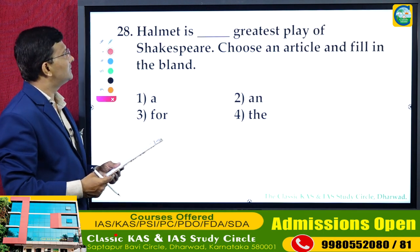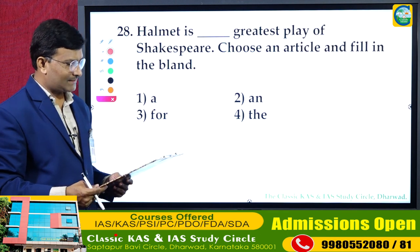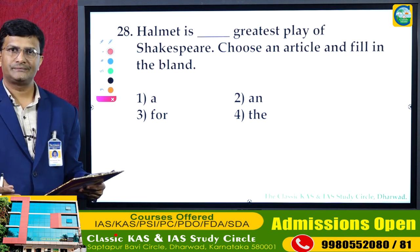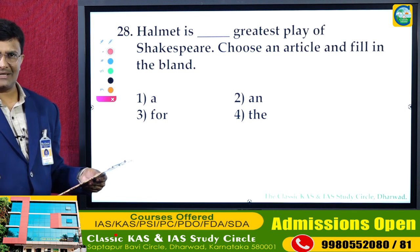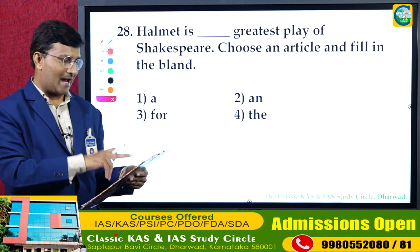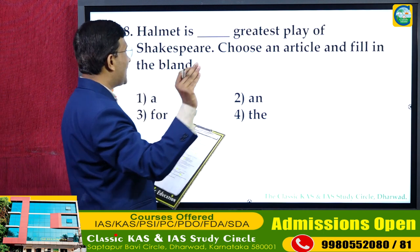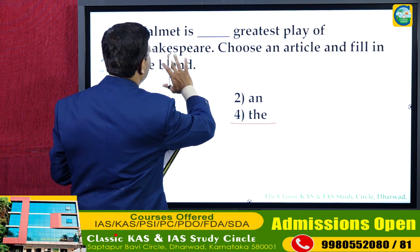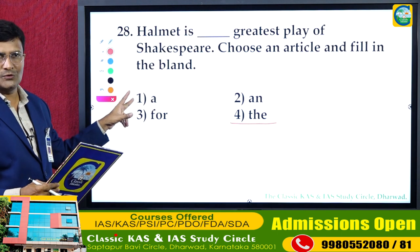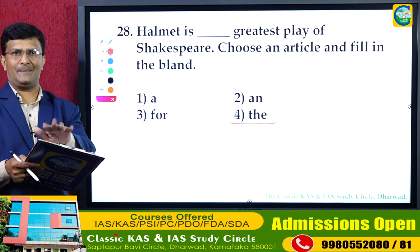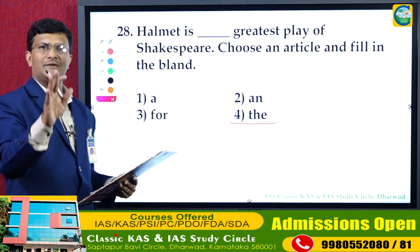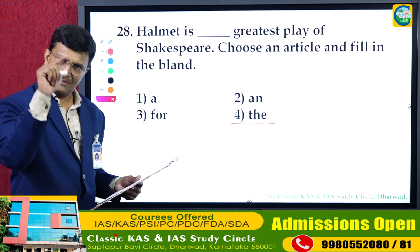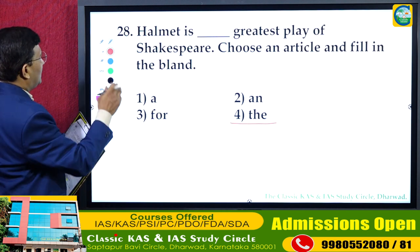Question 28: 'Hamlet is ___ greatest play of Shakespeare.' Hamlet is a particular play, so we use the definite article 'the.' 'A' means any one — a pad, a fan, a pen means any pen. 'The' refers to a particular item — the pen means a particular pen. So the answer is 'the'.